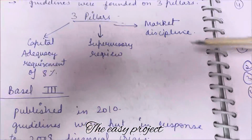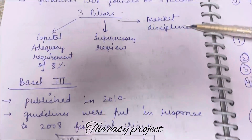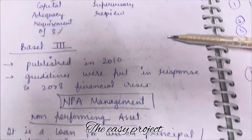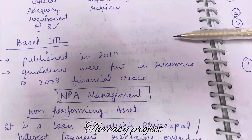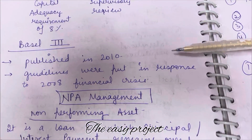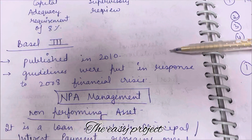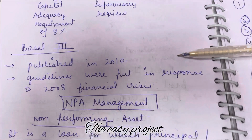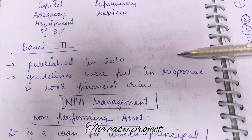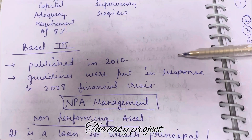Basel 3 was announced in 2010. In 2008, there were some financial crises, so they formed Basel 3 guidelines to recover from that.